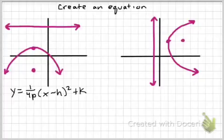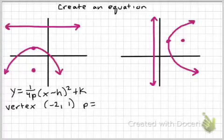So we need p, h, and k. I see that my vertex is at negative 2, 1. And I can see that my p value is 3 because that's the distance. I'm sorry, let's call that negative 3. Because that's the distance from my vertex to my focus. It's also the distance from my vertex to my directrix.